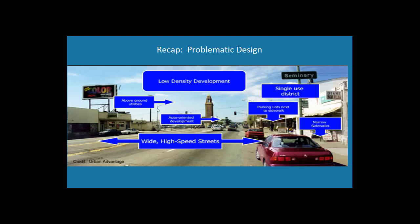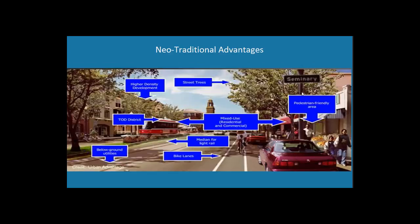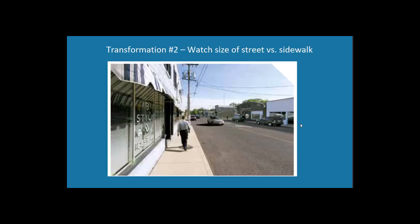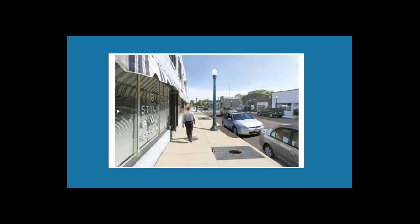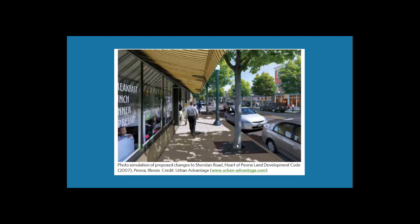It's safer for pedestrians to cross and you have more modes of transportation to get cars off the street. In summary: low-density development has wide, high-speed streets and narrow sidewalks — a single-use district. Whereas when you put in the infrastructure for neotraditional stuff — this is TOD, transit-oriented development — there's a bunch of development supported by a streetcar, bike lanes, a bigger pedestrian-friendly area, and mixed uses: residences next to businesses. That decreases traffic and puts people on the street at different times of day to keep the area safe. Another transformation: if you make the sidewalk bigger and the street narrower, it's a lot more inviting. Add awnings, trees, and taller buildings — it gives a very different feel very quickly.